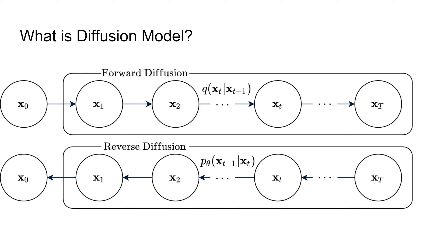The diffusion model is a Markov procedure that involves two steps. The first step is the forward diffusion — given the previous step, we approximate what the next image looks like with noise. We gradually add noise from the original image toward X_T, where X_T is the standard Gaussian noise image. In the reverse diffusion, we do the backward procedure, starting from X_T — the normal Gaussian distribution — and gradually remove the noise to reconstruct X_0, which is our original image.